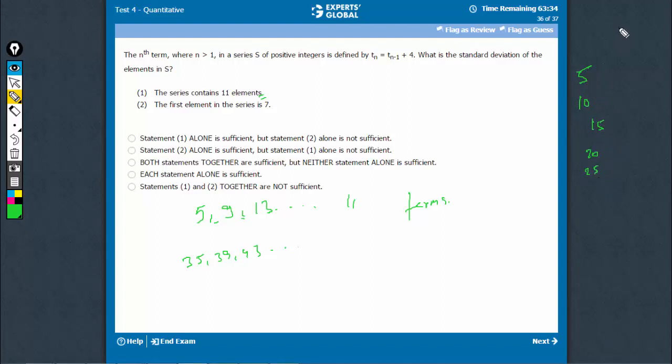First of all, the average is calculated 15 and then difference between average and each term is calculated. So, 10, 5, 0, minus 5, minus 10 and then these are squared up 100, 25, 0, 25, 100.